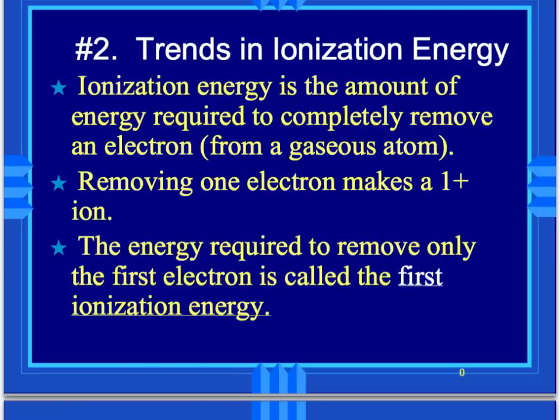Ionization energy is the amount of energy required to completely remove an electron. When we talk about this, we're talking about removing an electron from an atom in a gaseous state. We remove one electron, and it makes a one-plus ion. You might see it written with a plus one — either way is fine.